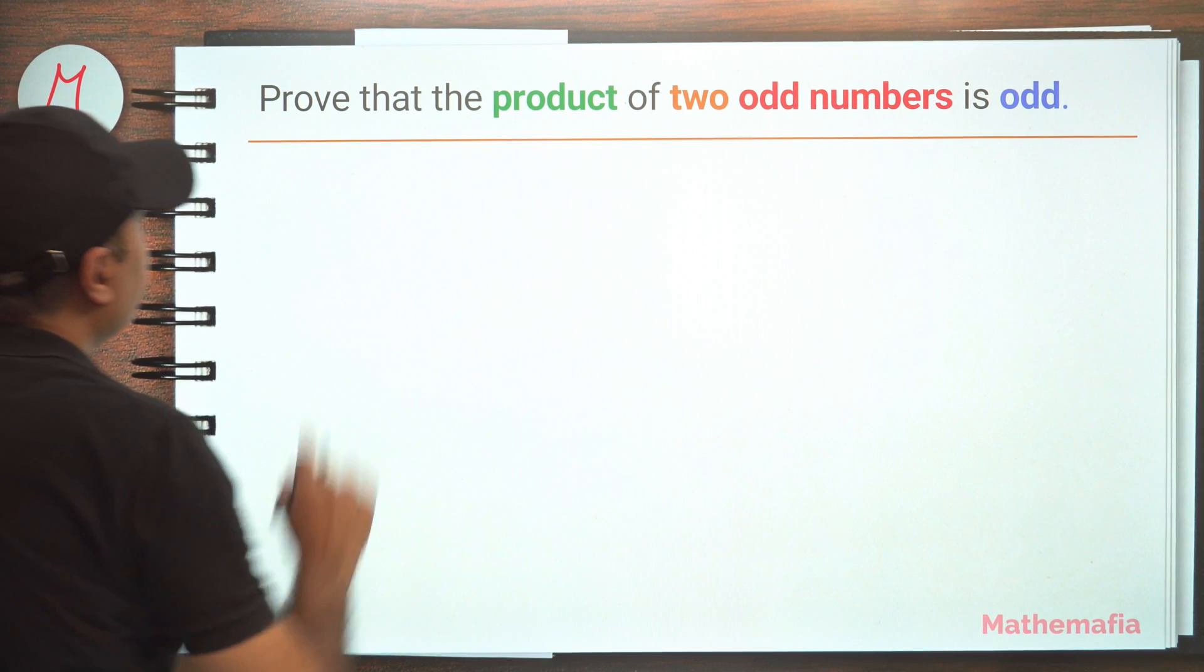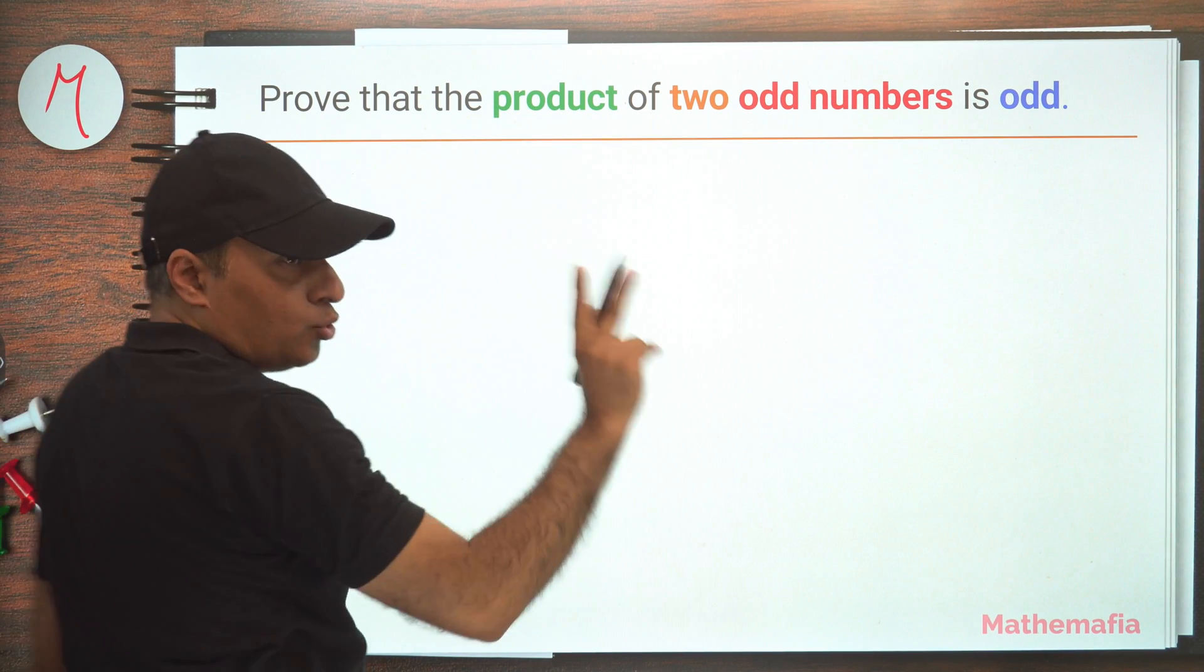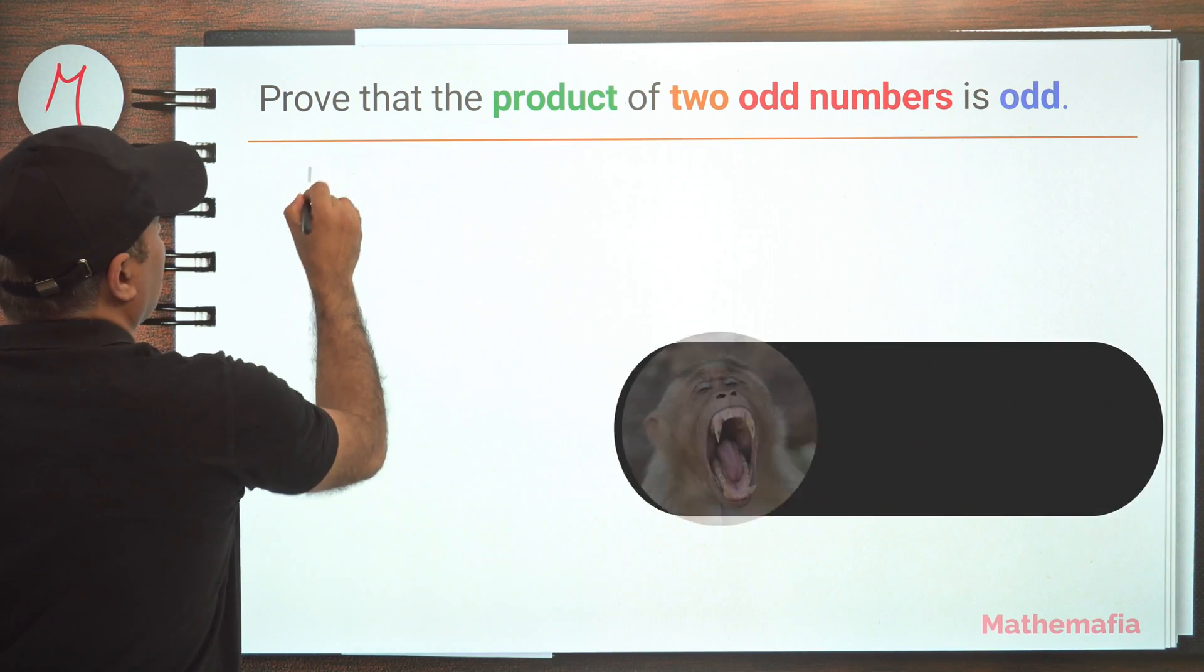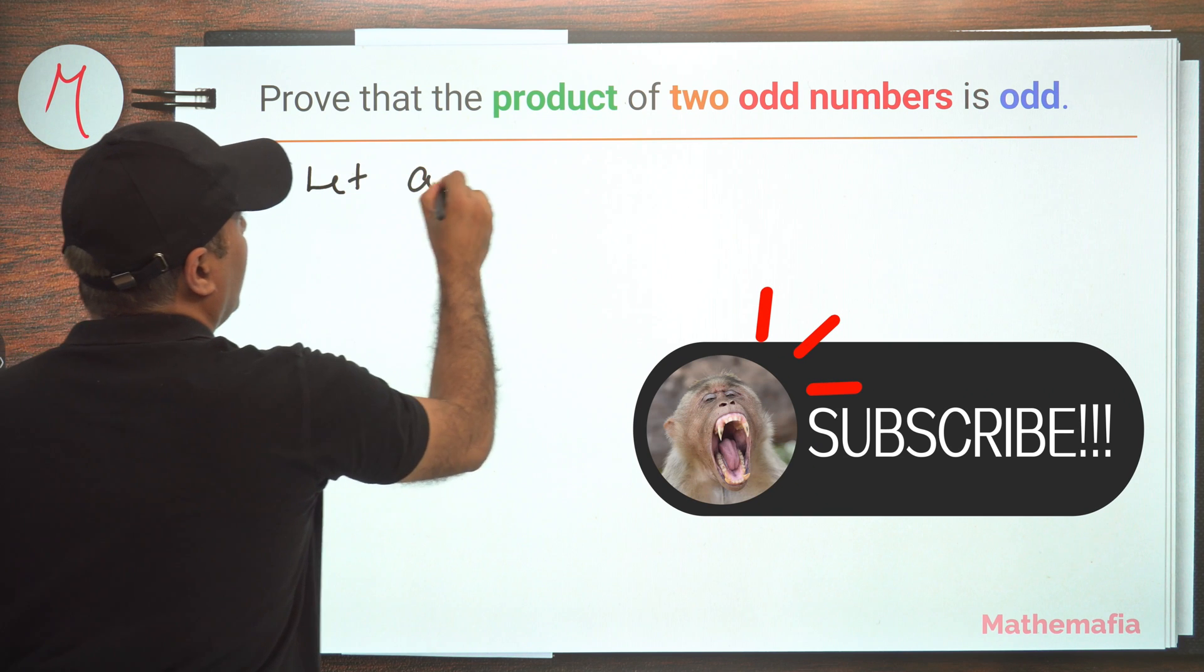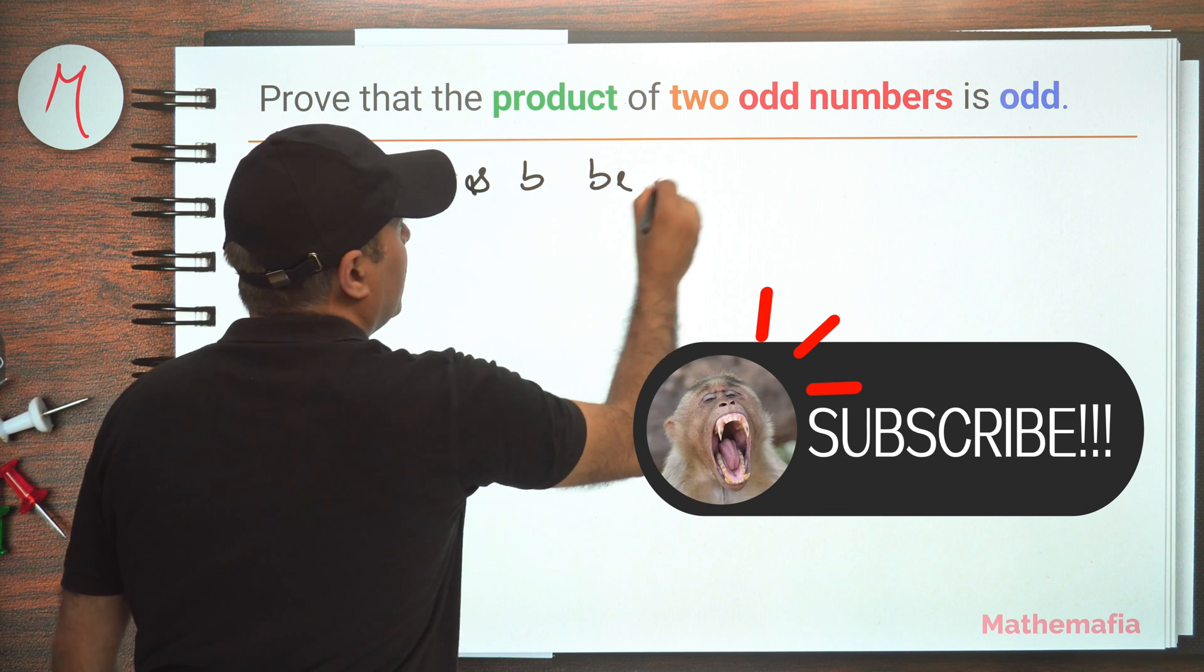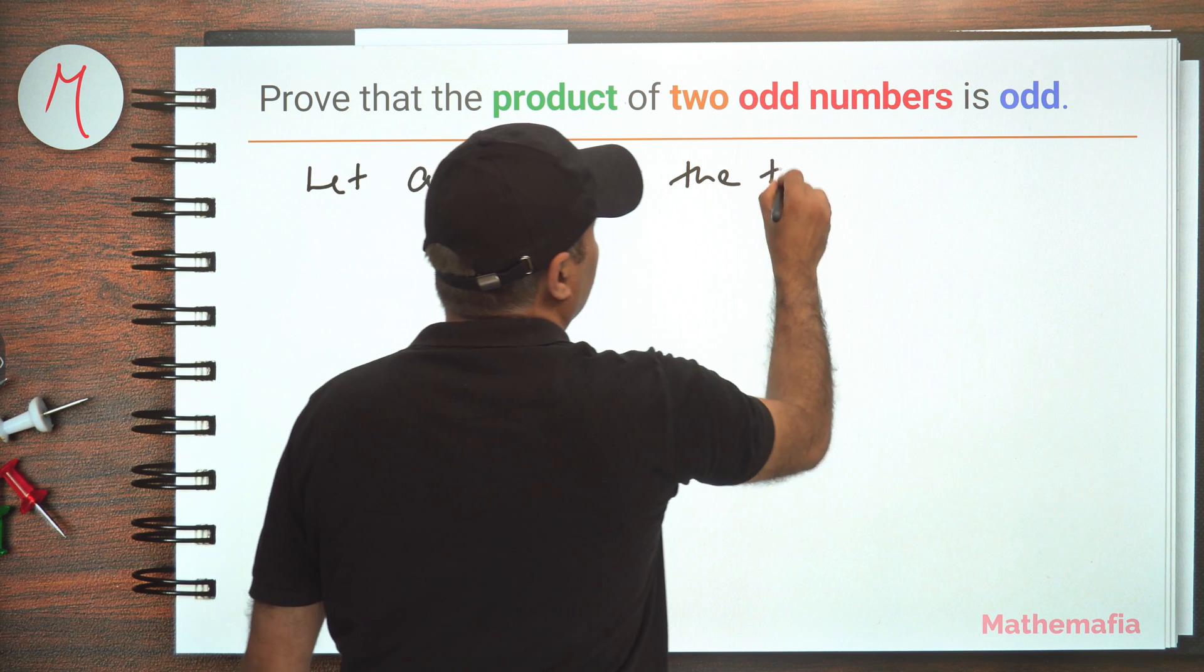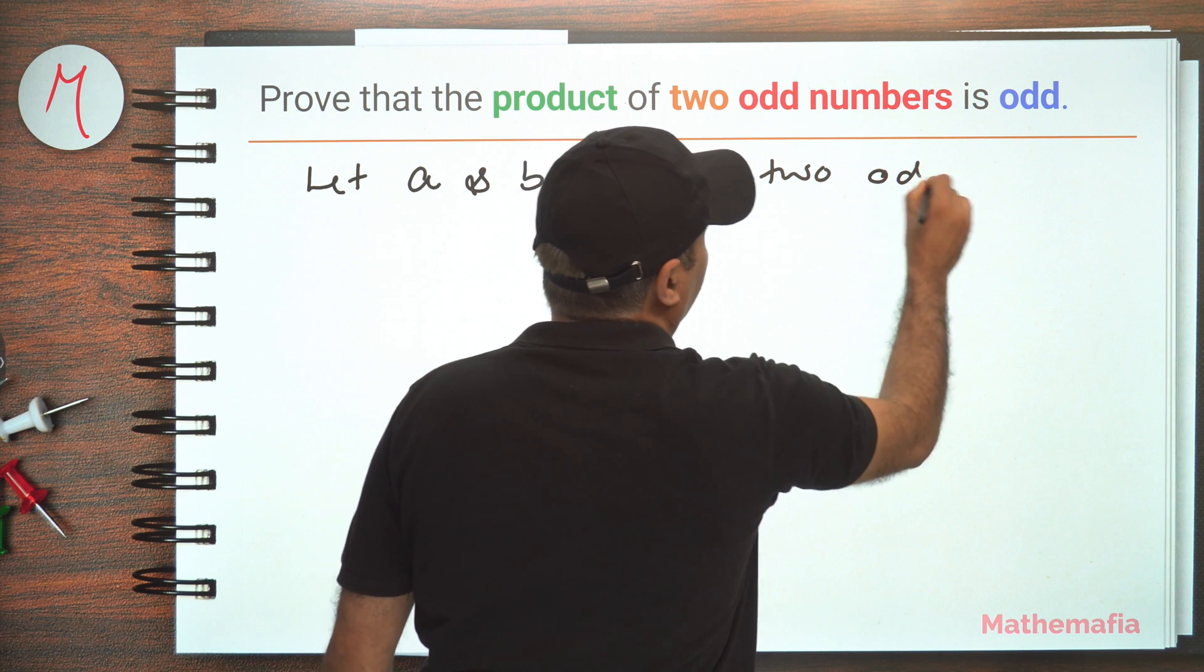So let's do it quickly. Let's take two odd numbers. So let a and b be the two odd numbers.